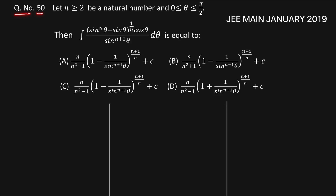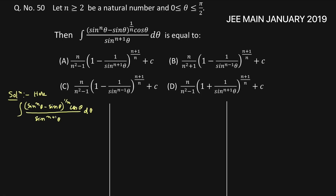Question number 50: given that n is greater than or equal to 2, n being a natural number, and theta is from 0 to pi by 2, we have to find the value of the integration of sin to the power n theta minus sin theta to the power 1 by n, times cos theta, divided by sin to the power n plus 1 theta, d theta.